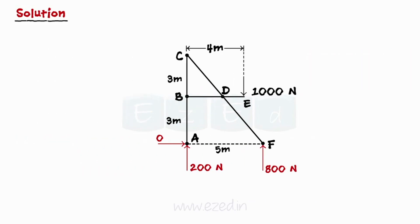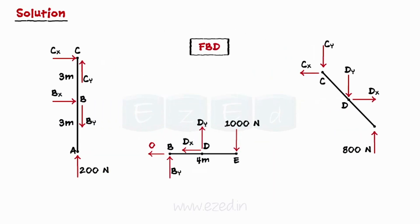We will now dismember the frame and draw free body diagrams of all the members separately as shown below. At the internal connection — that is, the pin — the directions of components of the reaction are assumed on any one of the members, and the opposite direction is assumed on the other member.